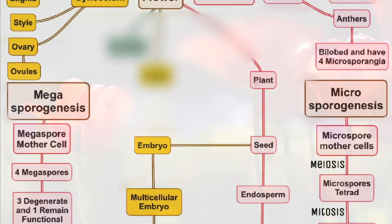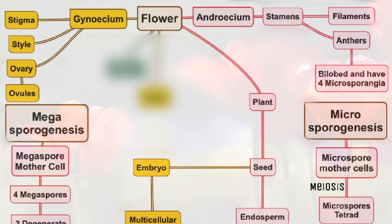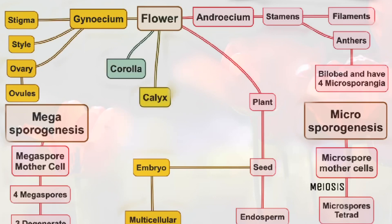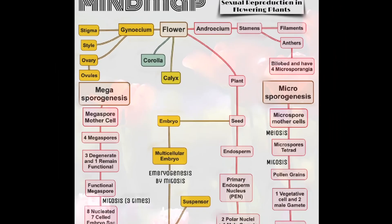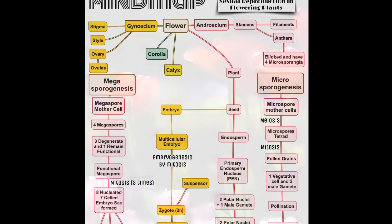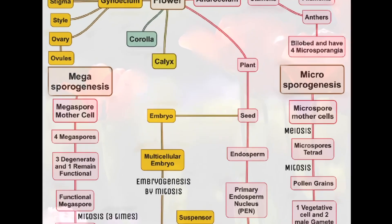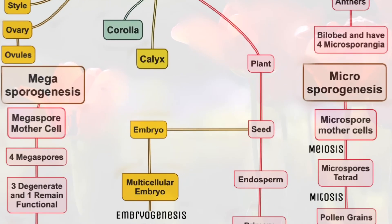The seed forms a plant and the plant produces flowers, thus completing the cycle. Corolla means the collection of petals, and calyx means the collection of sepals. This flowchart is complete and you can find it on the link given in the description. Please like this video, subscribe, and share it with your NEET mates to help them.